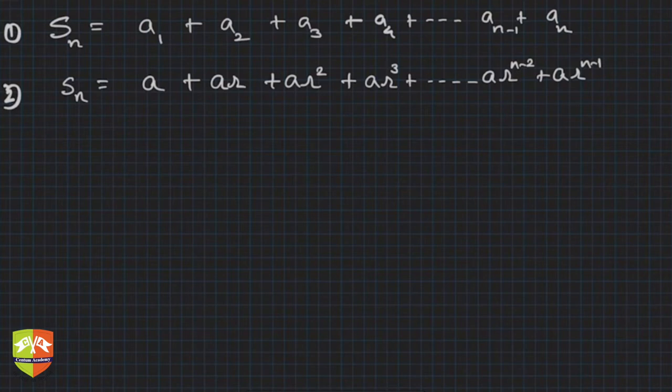Now third step where the game starts: I am multiplying both sides of the entire equation by common ratio r. So what will happen?